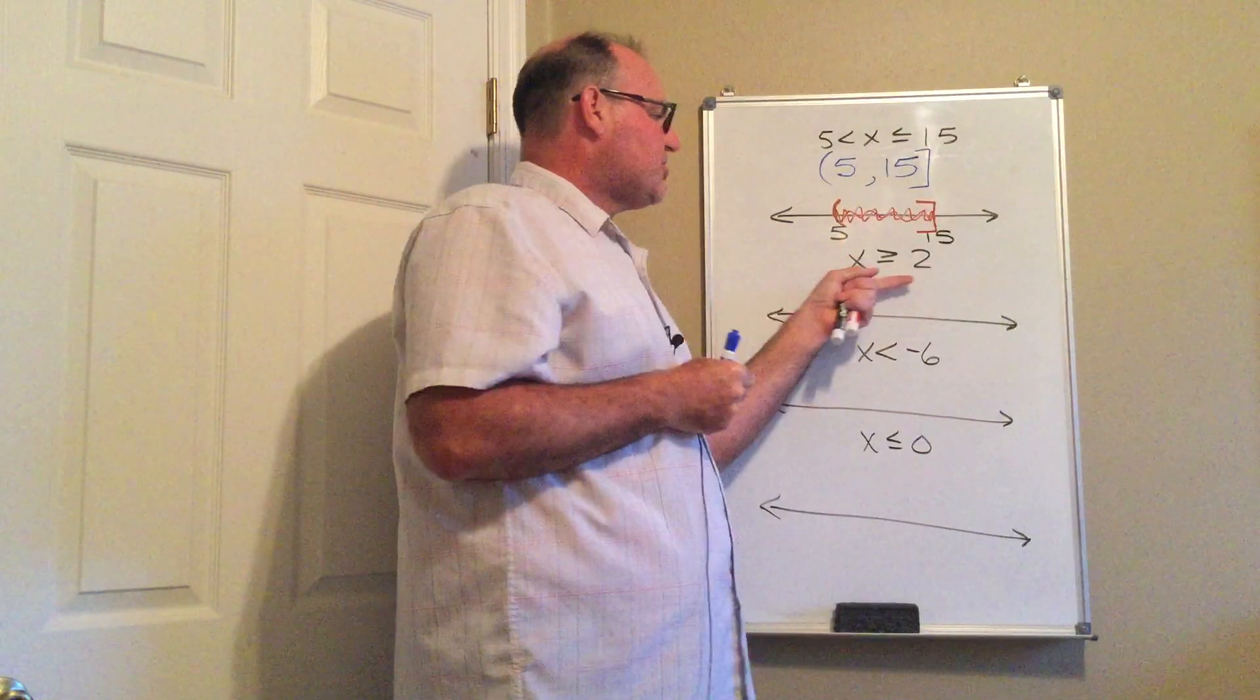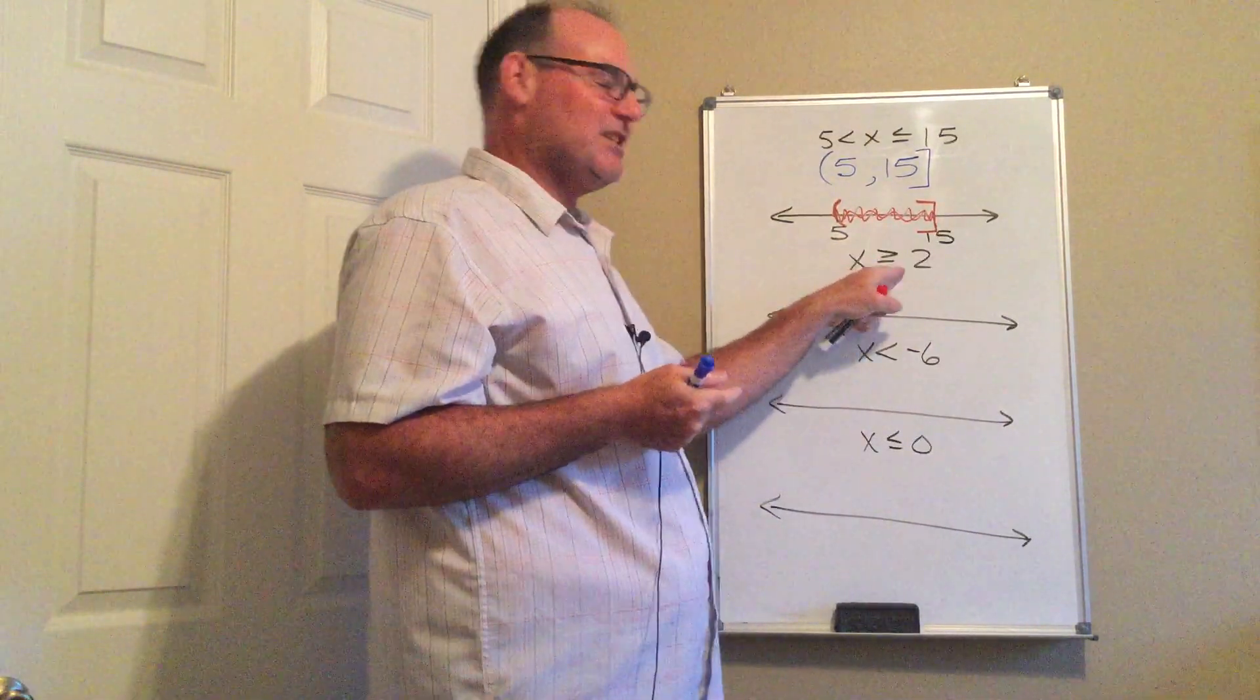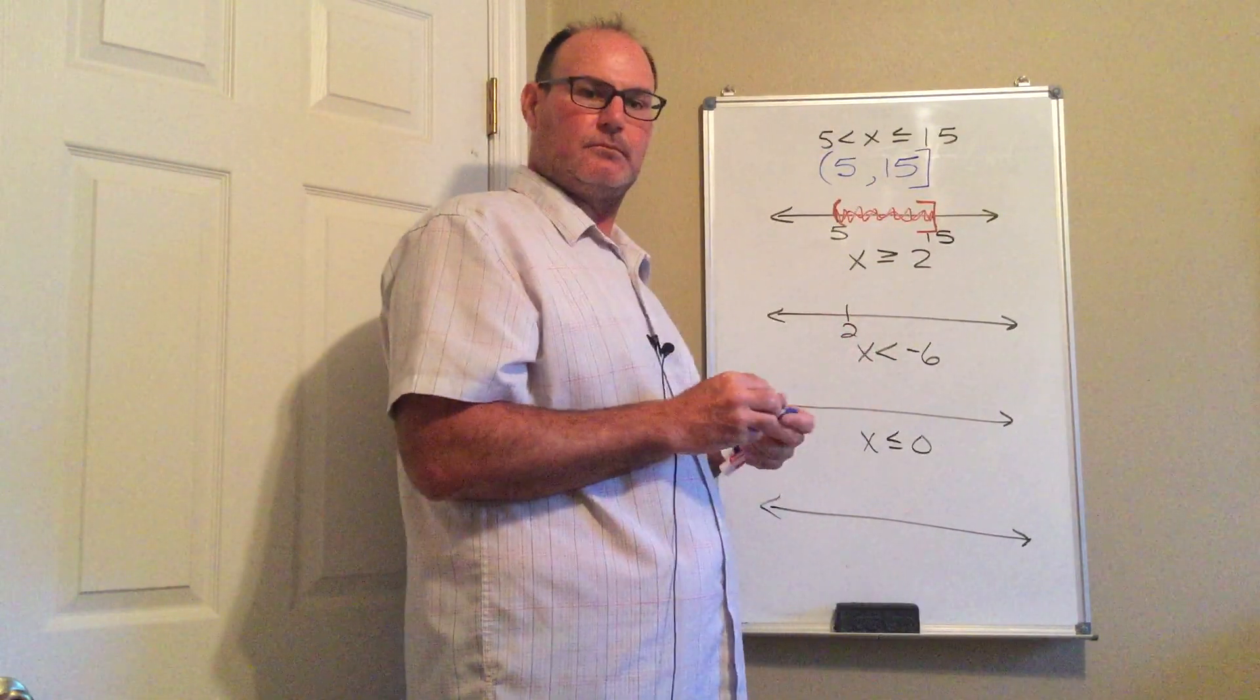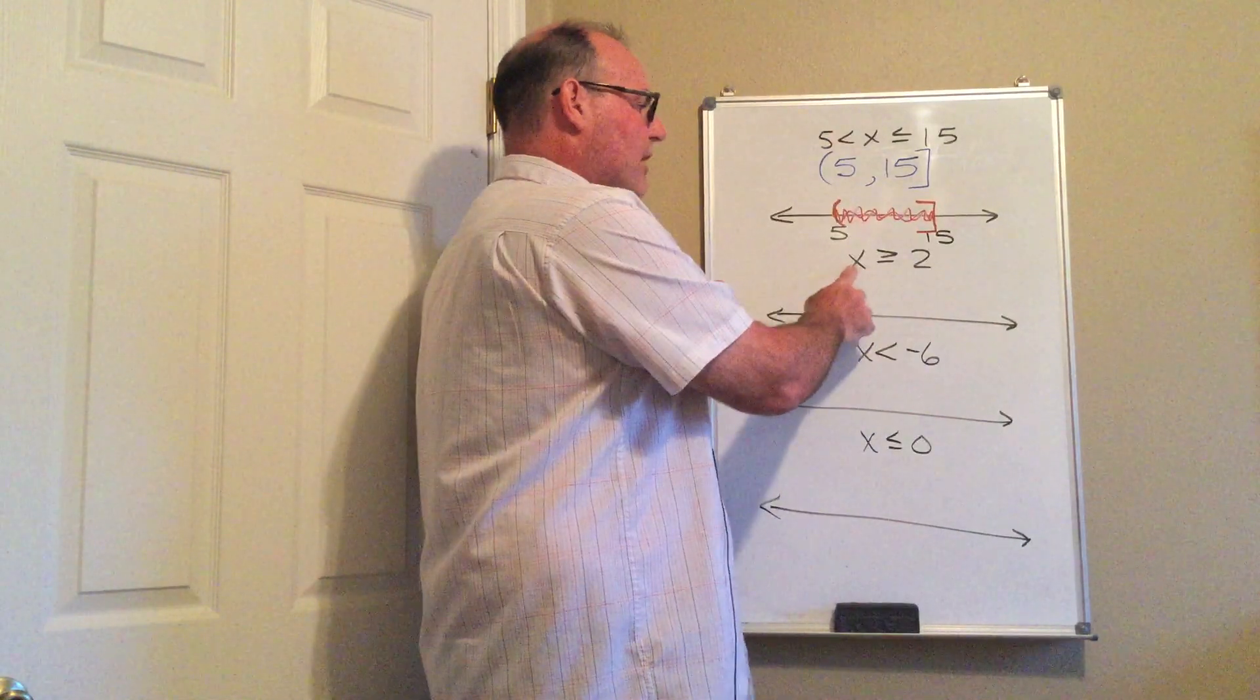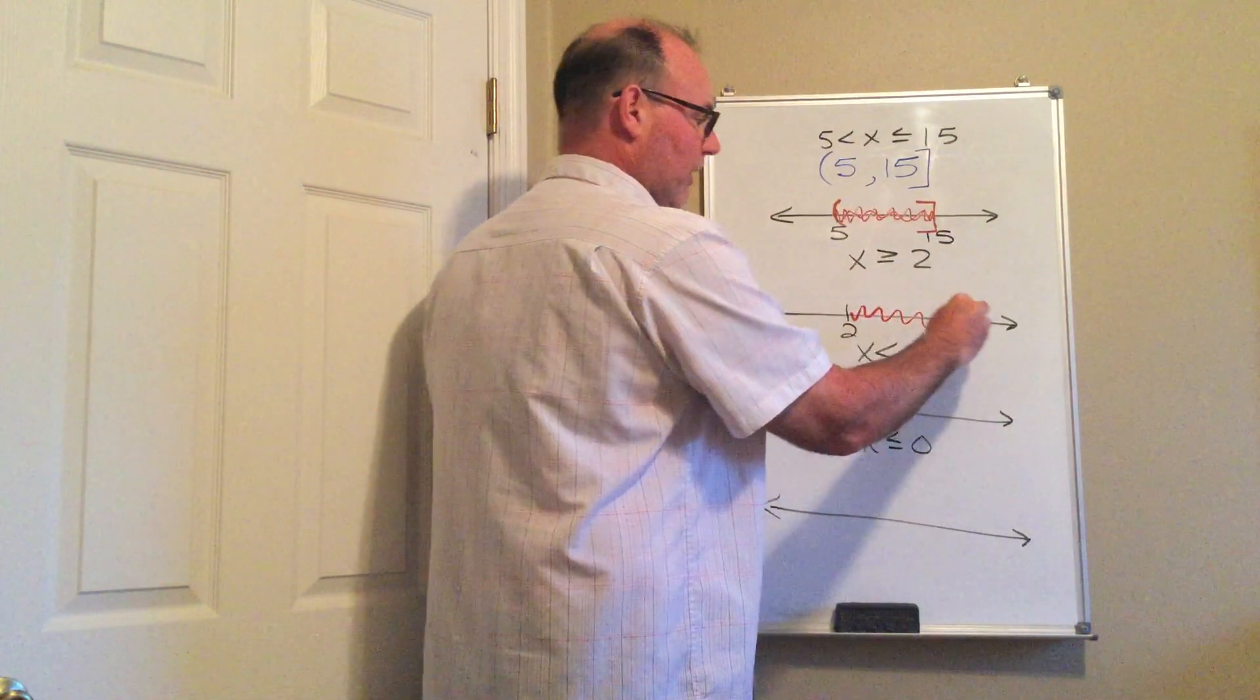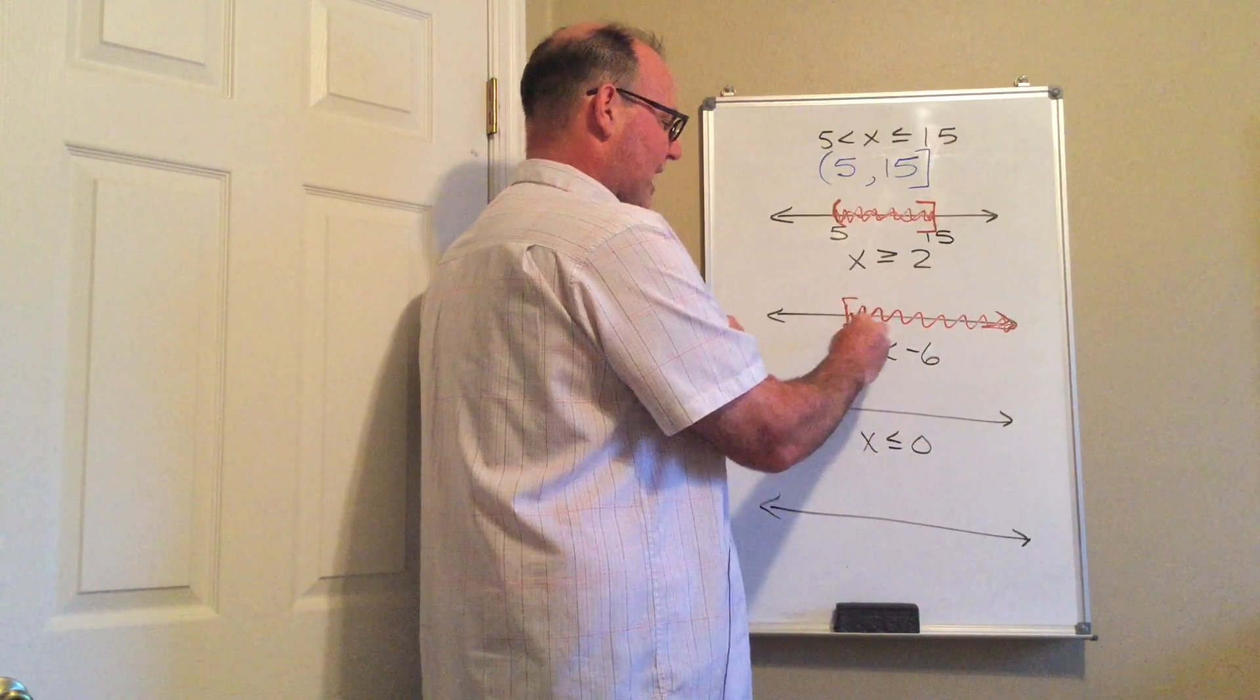How do we do interval notation when I have an interval that only has one boundary? So x is greater than or equal to 2. So my boundary here is 2. And now all the values greater than 2 are going to be shading this way right here. And then once again, because there's an equal, I'm going to put a bracket.